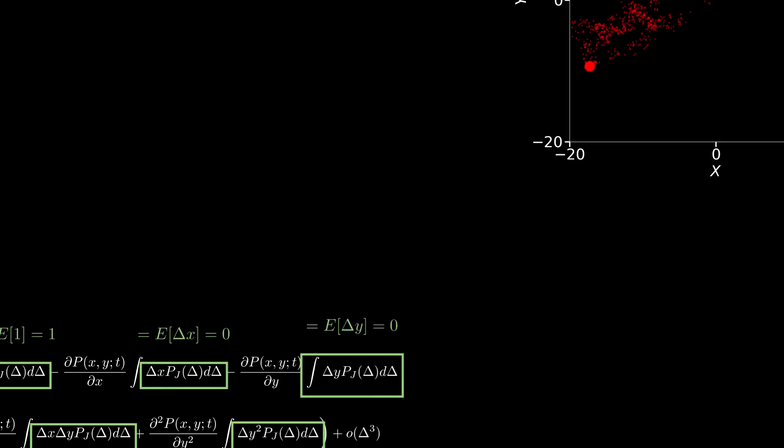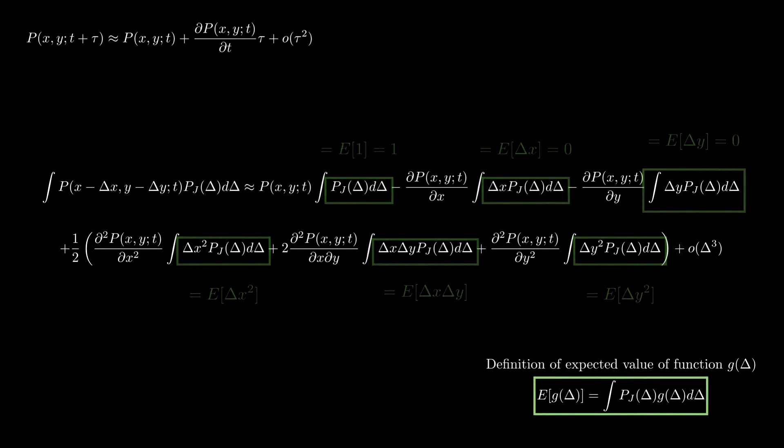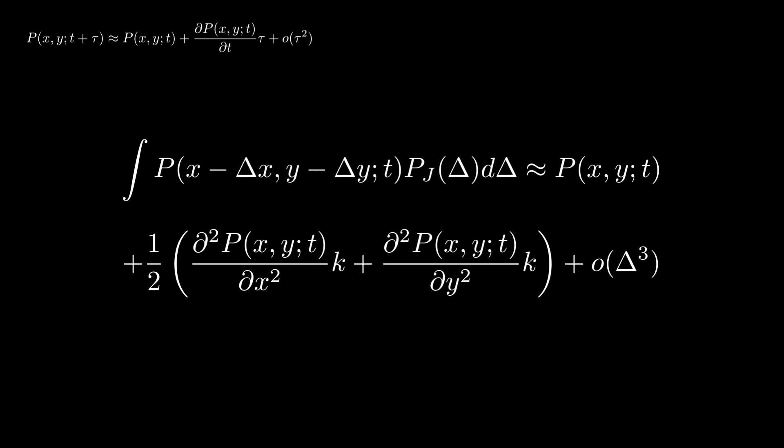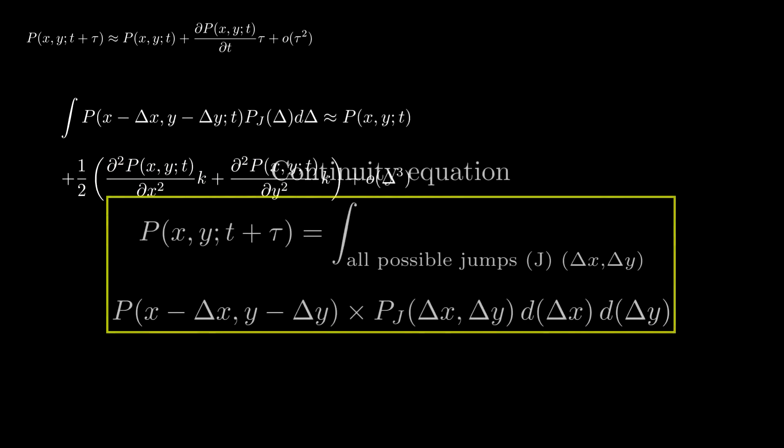With all of these considerations, our equation finally turns into this one right here, where k is nothing but the standard deviation of the size of the jumps.